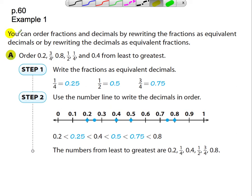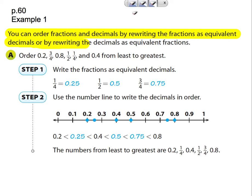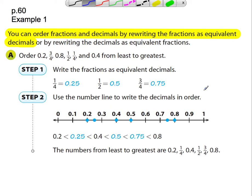So I'm going to highlight that because that's what I'm focusing on. The first example: order two-tenths, three-fourths, eight-tenths, one-half, one-fourth, and four-tenths from least to greatest. We pick all the fractions and turn them into decimals. I've got three-fourths, one-half, and one-fourth. I want to rewrite those as decimals: one-fourth, one-half, three-fourths. How did I get from one-fourth to 0.25? Well, if you're familiar with money, you know that one-fourth of a dollar is 25 cents, so that may come naturally.